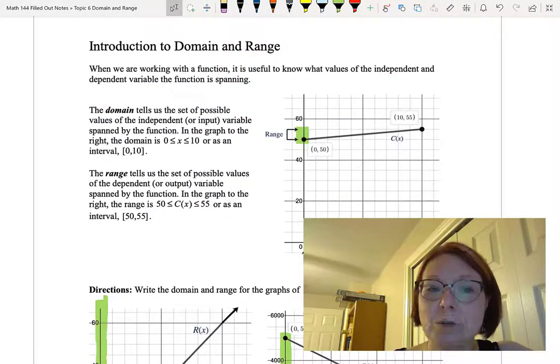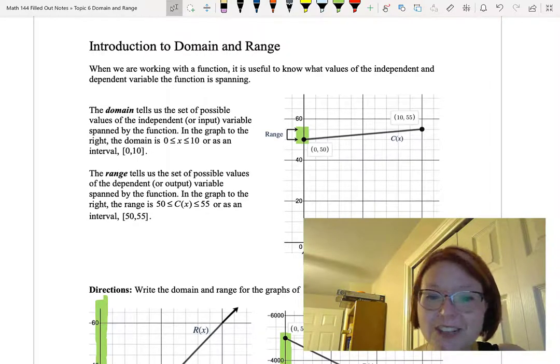To recap, domain tells us the set of possible values of the independent variable. Range tells us the set of possible values for the dependent variable.